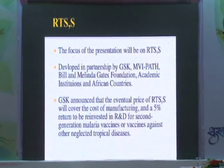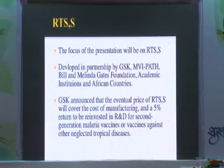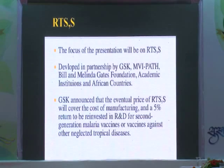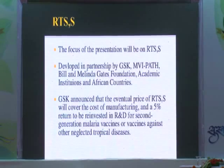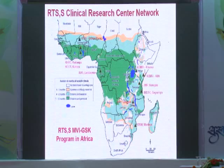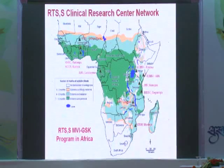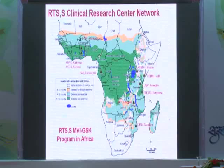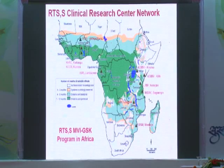RTS,S is the novel particle developed in partnership by GlaxoSmithKline, PATH, the Bill and Melinda Gates Foundation, academic institutions, and nine sub-Saharan African countries. This is the RTS,S clinical research center network in sub-Saharan African countries — nine countries, 11 sites, and a phase III trial on 15,460 patients.